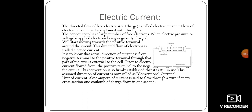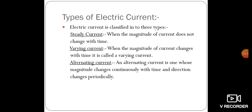Unit of current: one ampere of current is said to flow through a wire if at any cross section one coulomb of charge flows in one second. Types of electric current: electric current can be classified into three types — steady current, varying current, and alternating current.